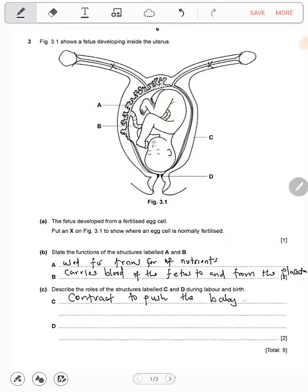And D, which is the cervix, it dilates. This one dilates to facilitate or to allow the exit of the baby.